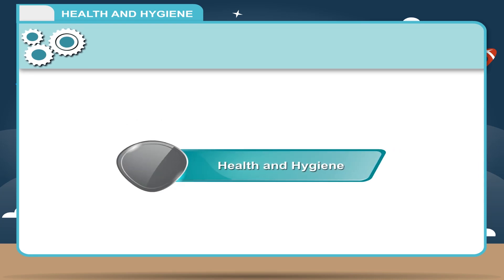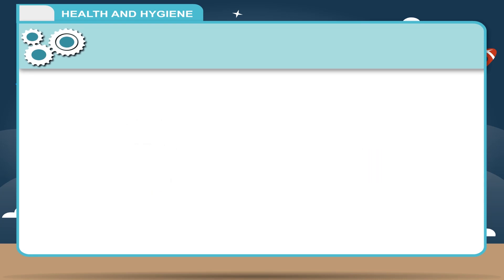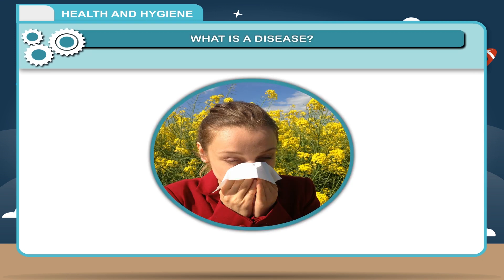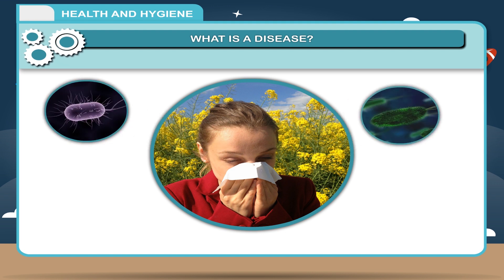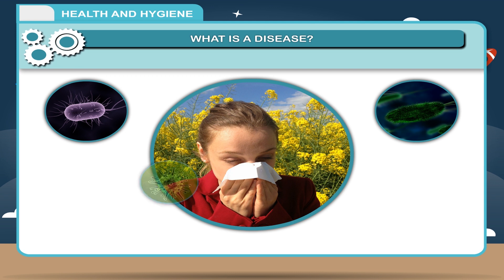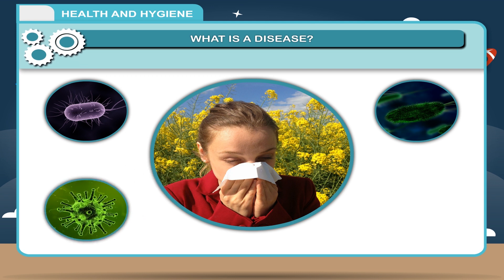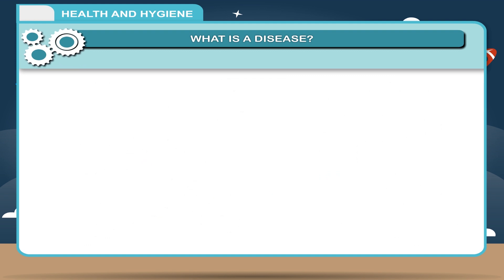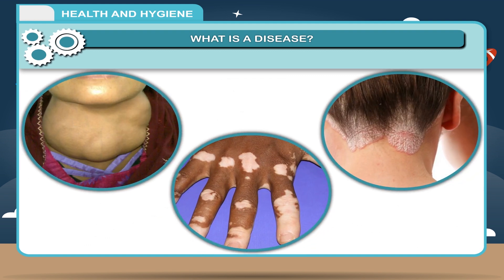Health and Hygiene. What is a disease? An illness caused by an infection or a deficiency is called a disease. A disease causes some harmful changes in the body called symptoms. They interfere with the normal functioning of the body. The symptoms indicate the particular disease a person is suffering from. There are different types of diseases.